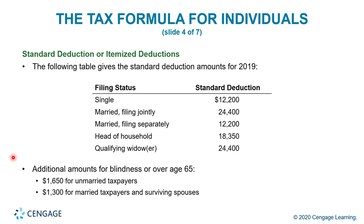For standard deduction or itemized deduction, the following table gives you the standard deductions for 2019. This is another table you need to know — it gives you that line item to determine whether you're going to use itemized or standard deduction. The filing status determines the standard deduction amount. Additional amounts are also allotted for blindness or being over age 65: $1,650 for unmarried taxpayers and $1,300 for married taxpayers and surviving spouses. Filing single and married filing separately have a lower standard deduction as opposed to married filing jointly or head of household.